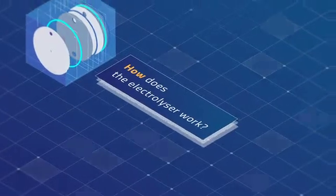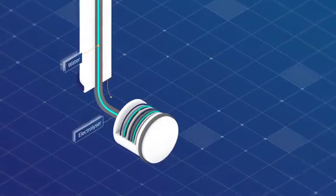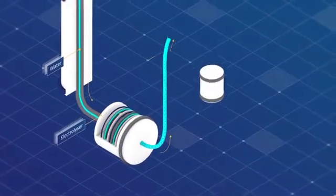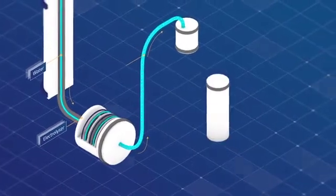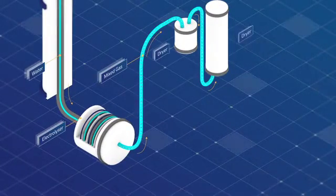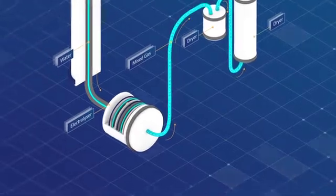How does the electrolyser work? Water is fed in, mixed with electrolyte, and travels to the stack where the chemical reaction happens and the gas is generated. The mixed gas continues its journey through the balance of plant to the dryers.